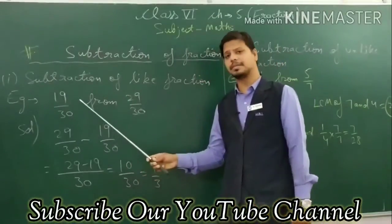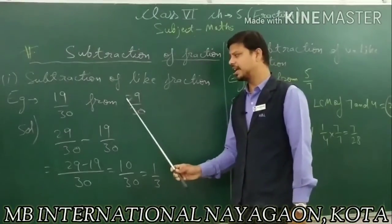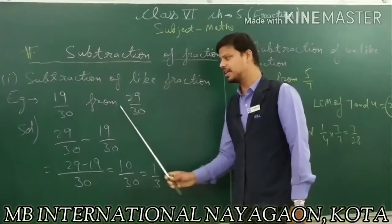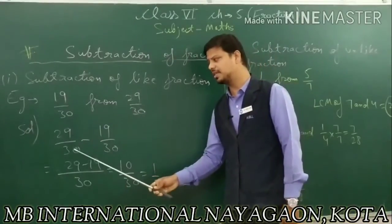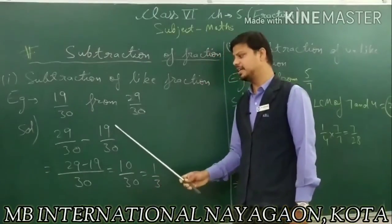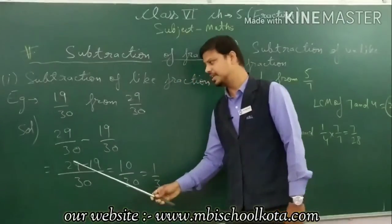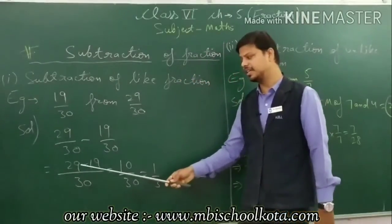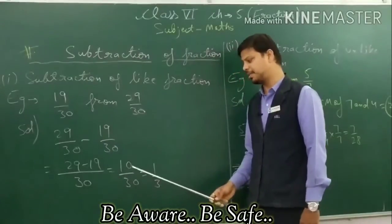The concept behind the subtraction is that first you write the number: 29 upon 30 minus 19 upon 30. For like fractions, 29 minus 19 equals 10. Your answer is 10 upon 30.